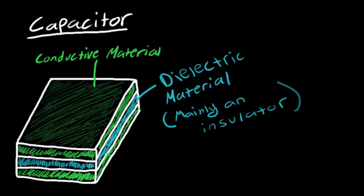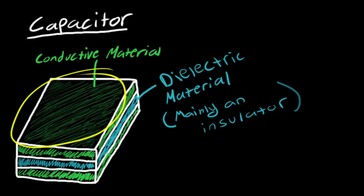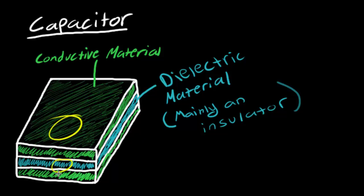Capacitors are made in many different ways, but the basic form is: you have a piece of conductive material and another piece of conductive material, separated by a very thin layer of a dielectric material — which is mainly an insulator. So essentially two metal sheets separated by a very small amount of insulation. Something as simple as that can power up a circuit.